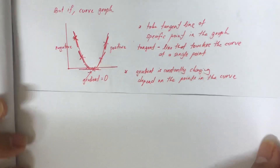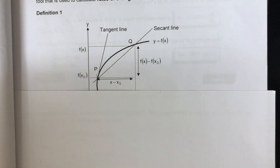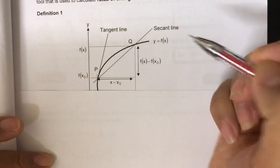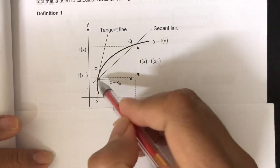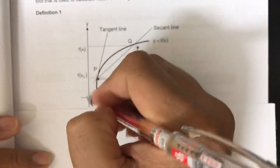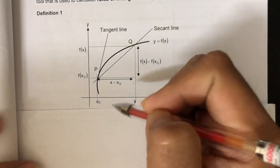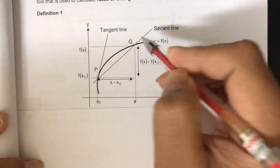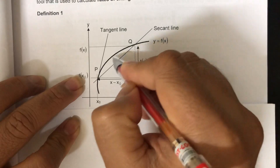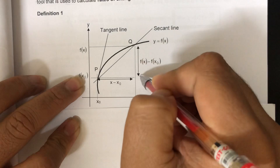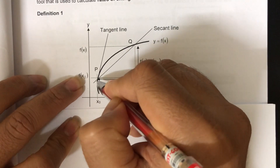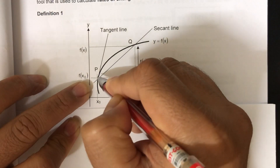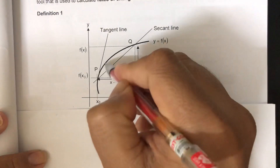Let's look at the textbook. If we have point P here and we want to find the tangent line at point P, we have this graph with points X0 and X. For Y, we have F(X0) and F(X). This is the curve line, and the second line touches the tangent point and also point Q. When Q approaches P — as Q gets nearer to P — we can find exactly the value of the gradient at point P.